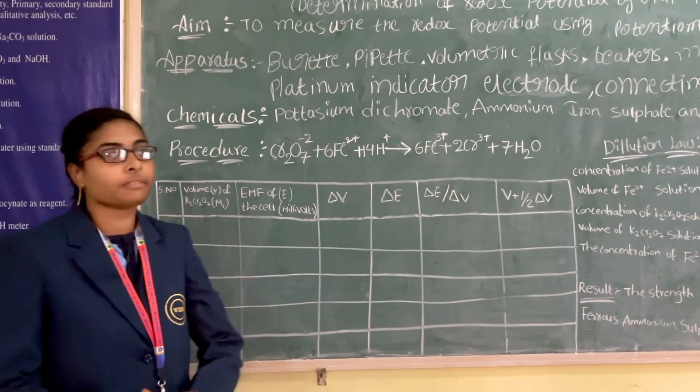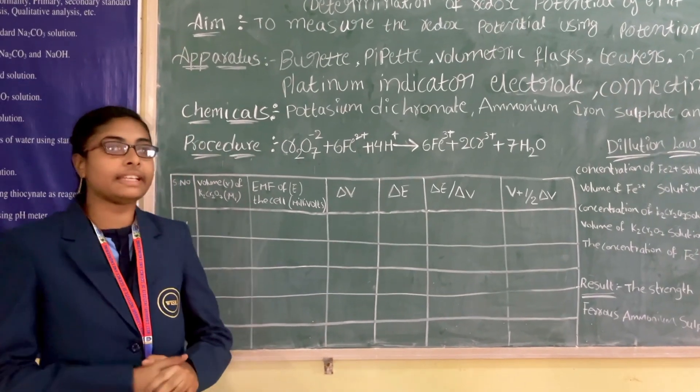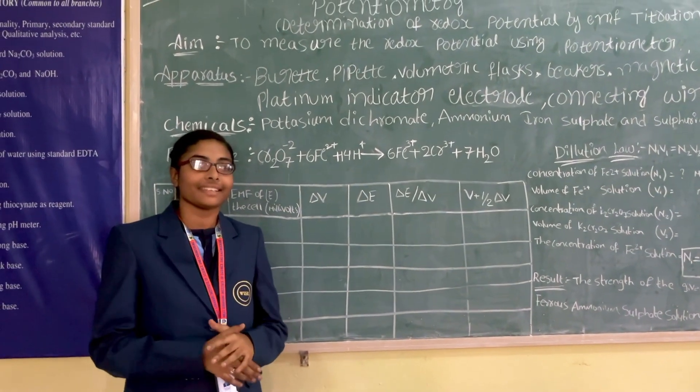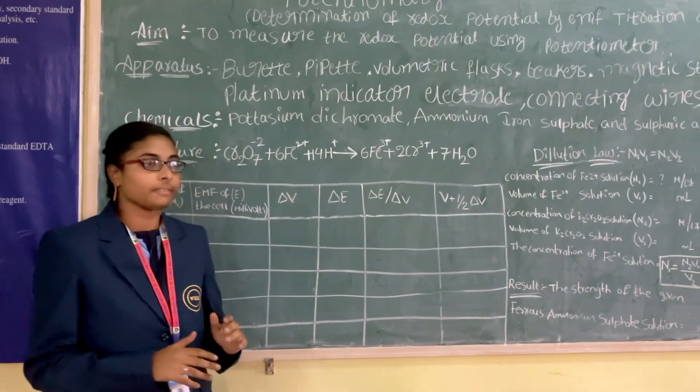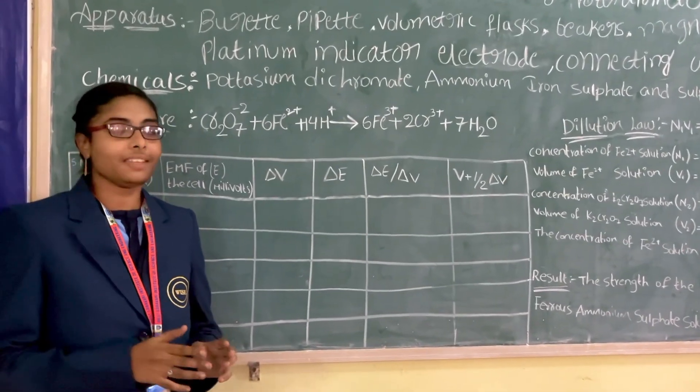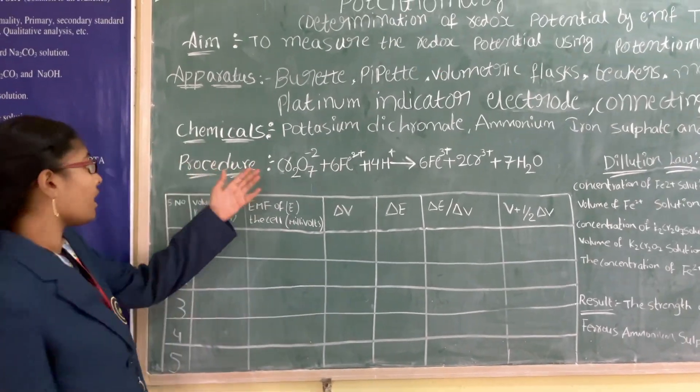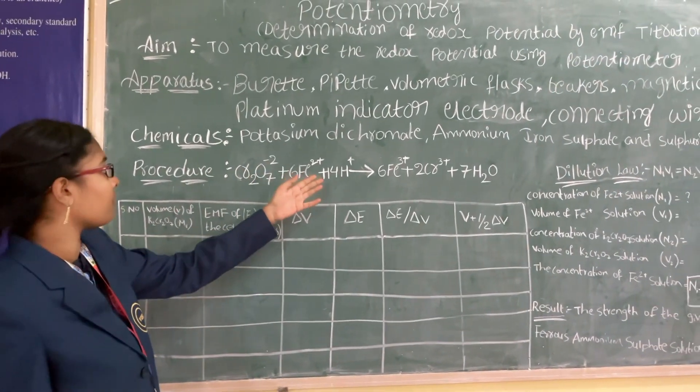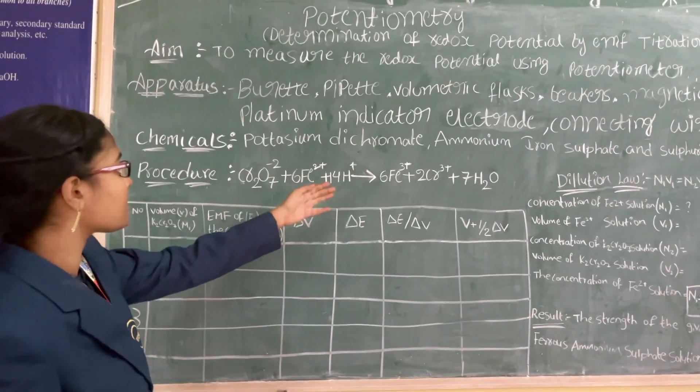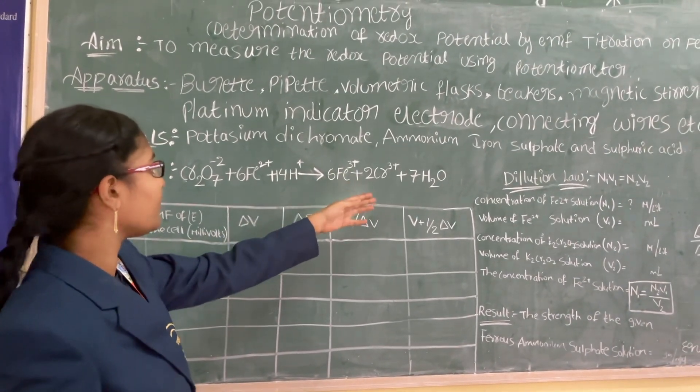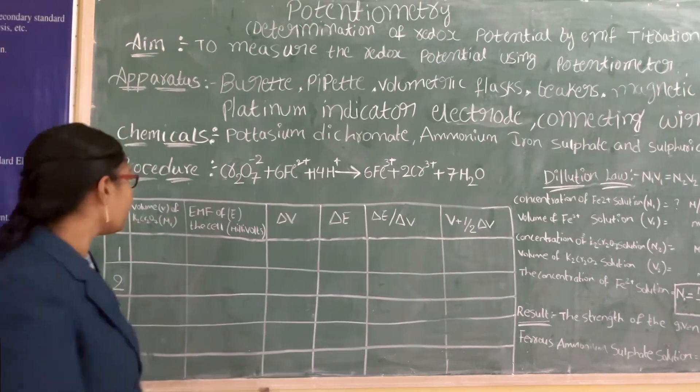The principle of this titration is the redox reaction between the titrants. Here is the formula: Cr2O7 2- plus 6Fe2+ plus 14H+ gives rise to 6Fe3+ plus 2Cr3+ plus 7H2O.